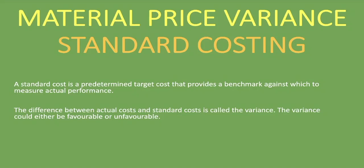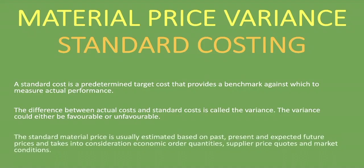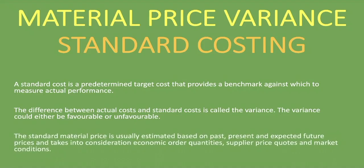You'll see how that's applicable as we look at the material price variance. The standard material price is usually estimated based on past, present, and expected future prices, and takes into consideration economic order quantities, supplier price codes, and market conditions. That is how a standard material price is set.